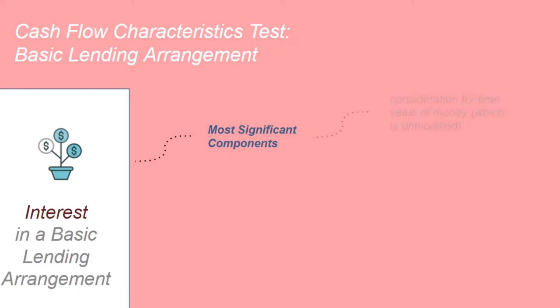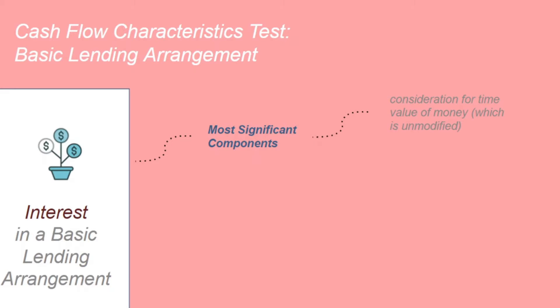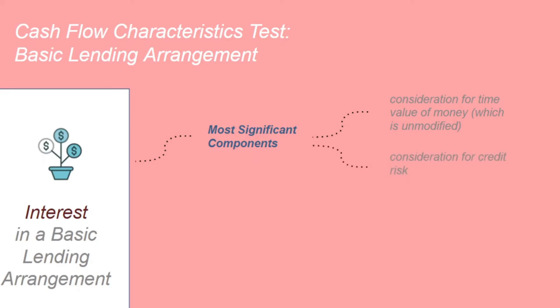The first component is consideration for the time value of money, which is unmodified. We all know that interest is basically due to the time value of money, but IFRS 9 adds that it should be unmodified — what 'unmodified' really means we'll go into in the later part of the video. The second component is consideration for credit risk.